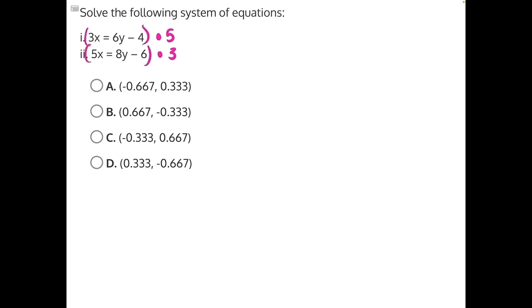So our first equation is going to look like 3x times 5 is 15x, 6y times 5 is 30y, and then negative 4 times 5 is negative 20.